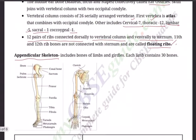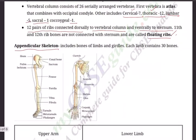Now for the limbs — hands and legs — that is the appendicular skeleton. Each limb is made up of 30 bones. For the forelimb: humerus is the upper arm bone. Then the lower arm has radius and ulna — remember Mutiah Muralitharan, the wrist bowler!